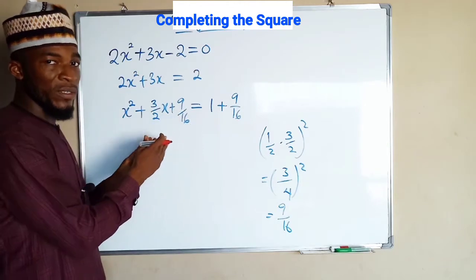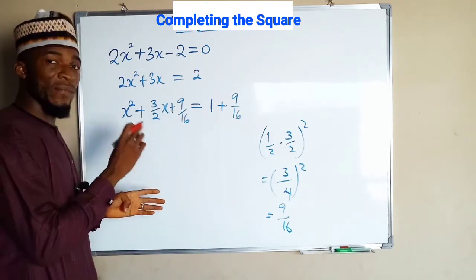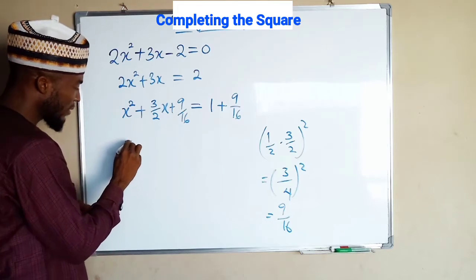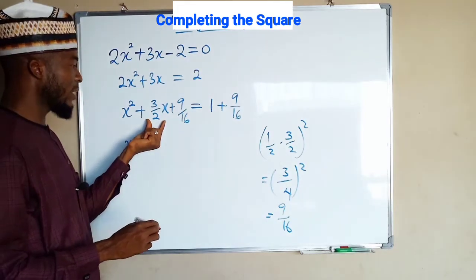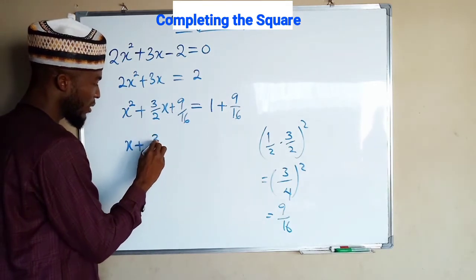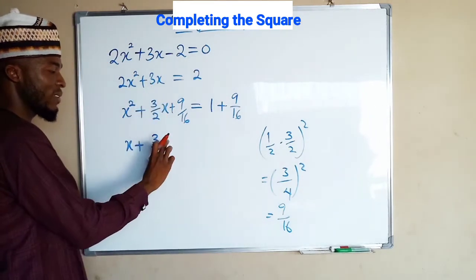Now we are free to factorize the left-hand side since it is a perfect square quadratic function. It is going to be x plus half of the coefficient of the middle term, which is going to make it 3 over 4, because half of this is this. All squared.